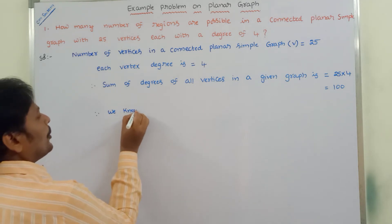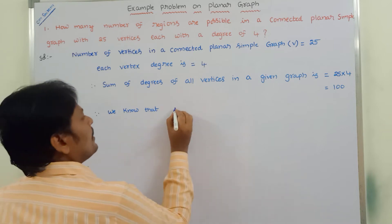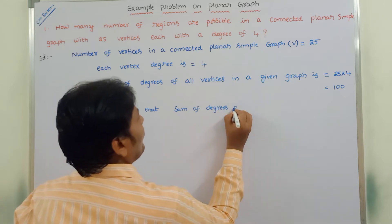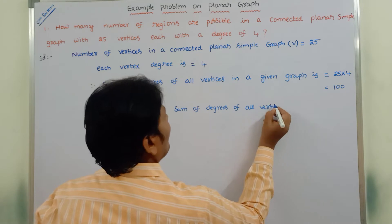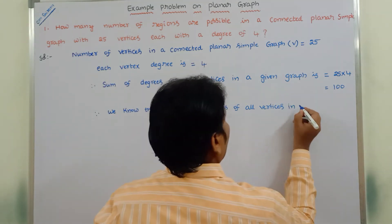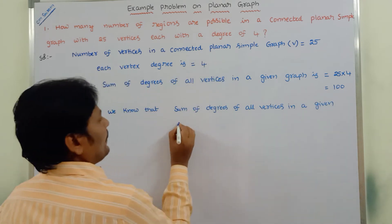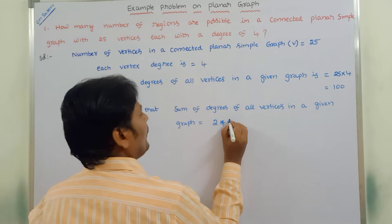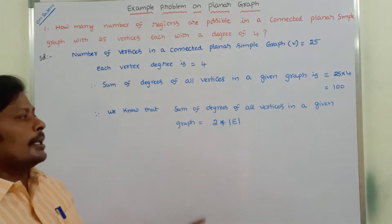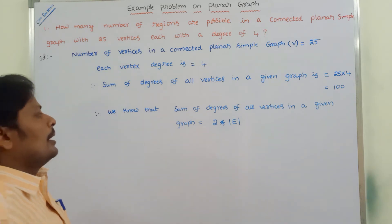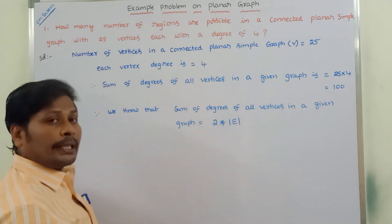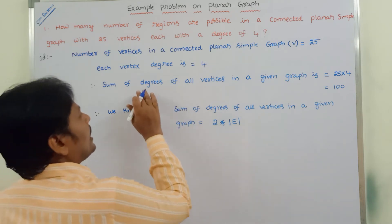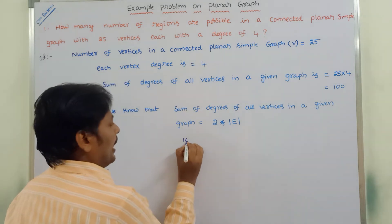We already know that the sum of degrees of all vertices in a given graph is equal to 2 × |E|, where E is the number of edges in the given graph. So the sum of degrees of all vertices equals twice the number of edges. We already know the sum of degrees is 100.